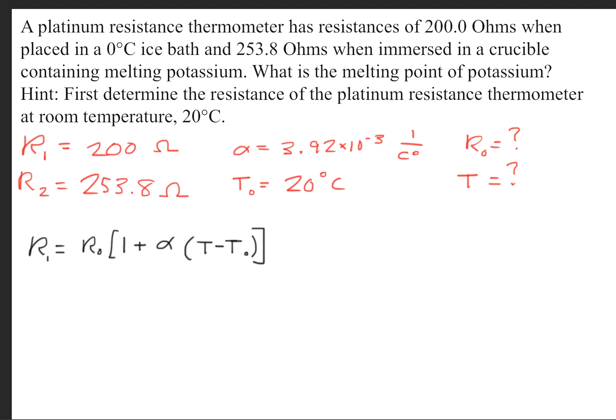Now let's begin this question by labeling all of the given information. So the first resistance is 200 ohms, and we'll denote that with R sub 1. The second resistance will be 253.8 ohms, denoted with R2.